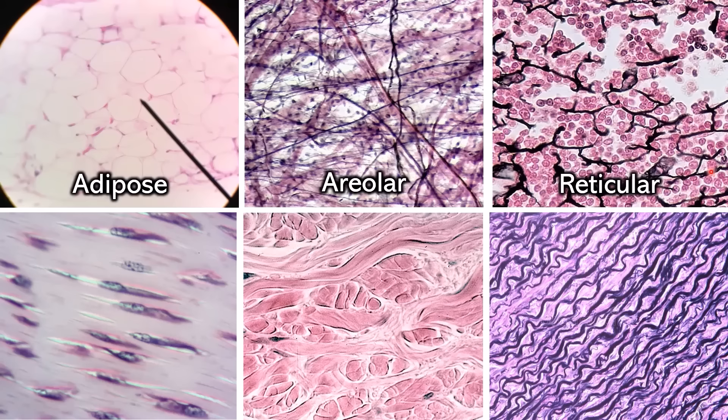All the ones on the top are loose connective tissues because they're not packed as densely — they don't have as much collagen. If we go down to the bottom, now this is a dense connective tissue. You see the fibers are stained a light pink. The fibers are all going in one direction and the cells are kind of smushed in between the different fiber bundles. This is dense regular connective tissue.